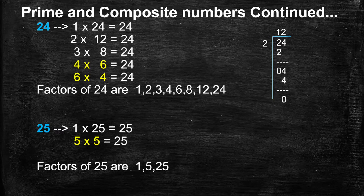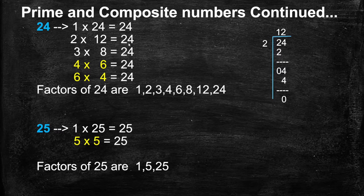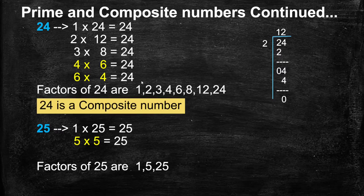Now we got all the factors of 24: 1, 2, 3, 4, 6, 8, 12, 24. Factors of 24 are 1, 2, 3, 4, 6, 8, 12, 24. We know a number that has more than 2 factors is called a composite number. So 24 is a composite number.